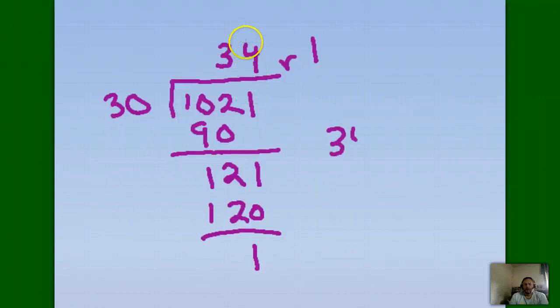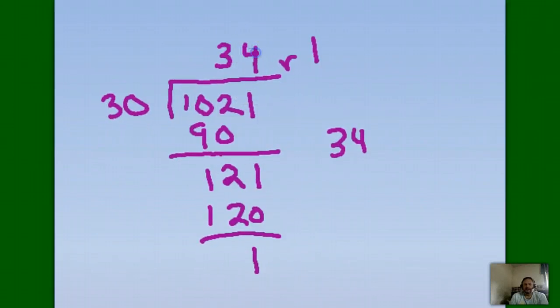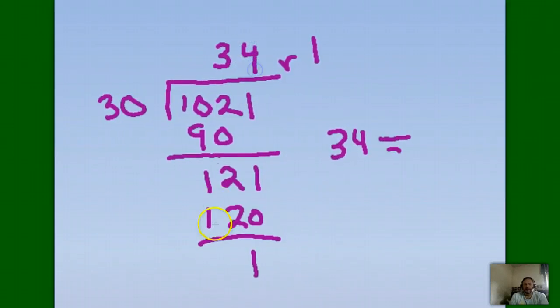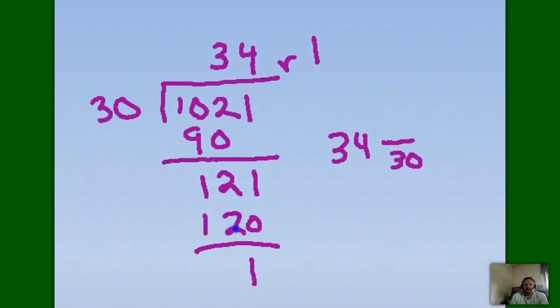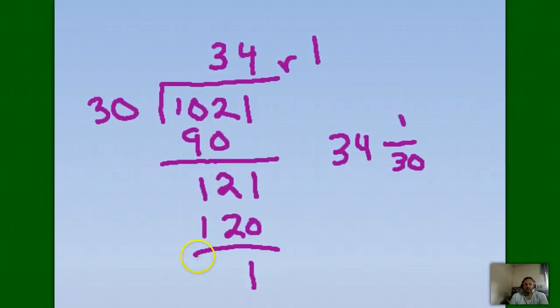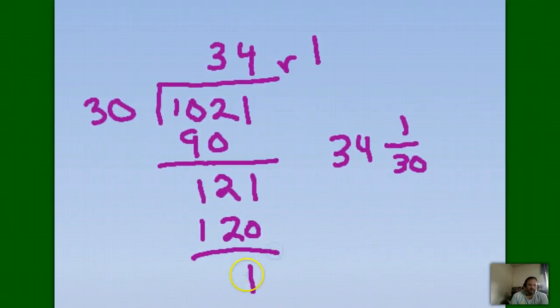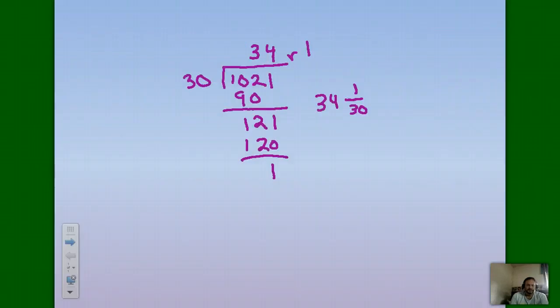Or 34, and if I write this as a fraction, 30 is the number that I'm dividing by, so that goes on the bottom. How many pieces did I have left over? Out of 30 parts, I had 1. So that would be how we write that as a fraction. That's our answer for this one.